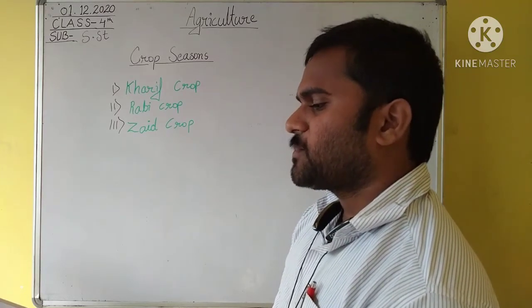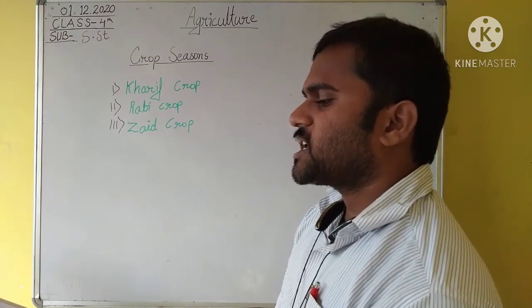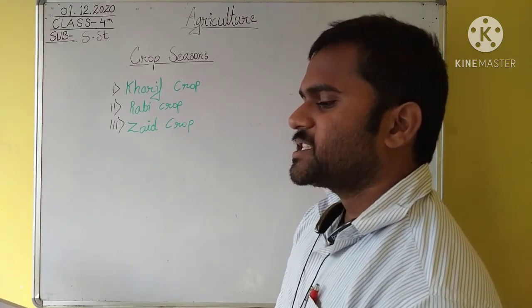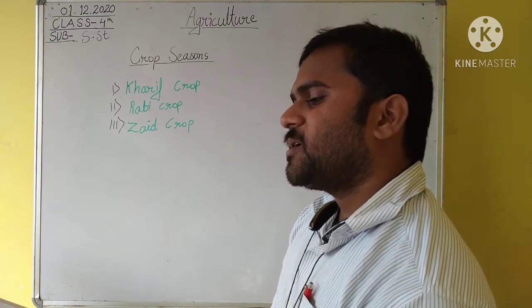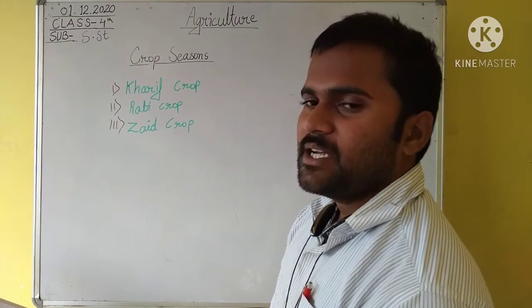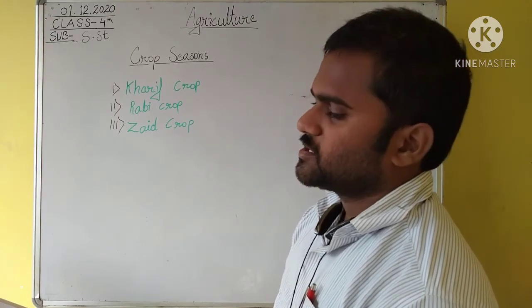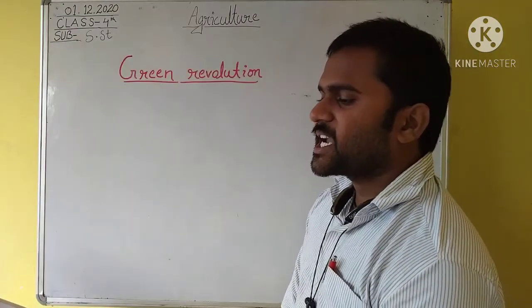Our third topic is Zaid crop. Zaid season remains from March to June. The crops grown in this season are called Zaid crops. The main Zaid crops are vegetables and fruits.